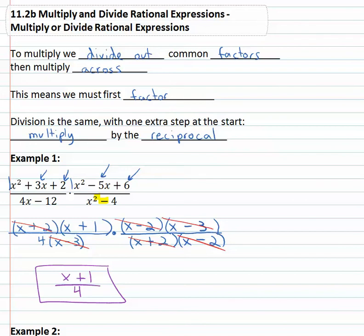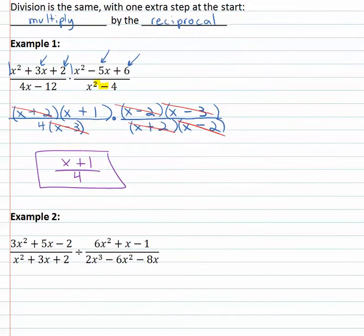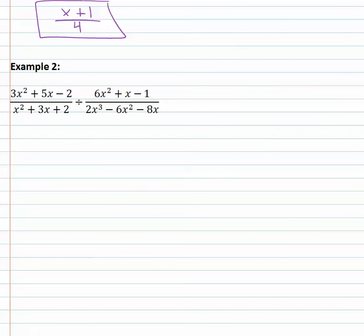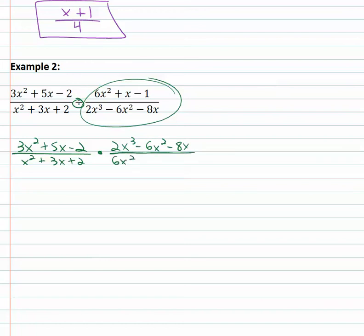Let's take a look at another example. This example is a division problem. We know division just requires one extra step. Instead of division, we're going to multiply by the reciprocal of the second fraction. So the first rational expression stays the same, 3x squared plus 5x minus 2 over x squared plus 3x plus 2. And now we're multiplying by the reciprocal, 2x cubed minus 6x squared minus 8x over 6x squared plus x minus 1.